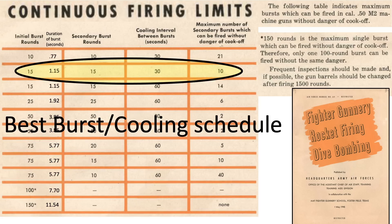To maintain accuracy, limit dispersion, cook-offs, and barrel overheating, it is best to keep the burst to 15 rounds or less. Ideally, bomber gunners and fighters should limit themselves to a 15-round burst followed by a repeating 30-second cooldown and secondary 15-round burst during each combat engagement. Flexible mount gunners should consider limiting their burst to around five rounds, since their guns cannot be held with the rigidity needed to maintain accuracy beyond five rounds. This burst-cooling mix can be repeated up to 10 times without the danger of cartridge cook-off, delivering the optimum number of rounds while maintaining adequate barrel cooling, limiting cook-offs, and providing adequate dispersion.